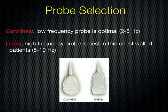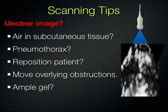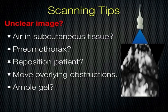A couple of quick tips for any kind of imaging: if you don't have a great picture, you need to troubleshoot. Do you have enough gel? Air is your enemy, gel is your friend. If you don't have good contact with the chest wall, or something is obstructing — a bandage, a bra strap — you need to clear those. You may need to reposition the patient. Also consider whether you can't see anything because there's air in the tissues or a pneumothorax obliterating your image — that itself tells you something.